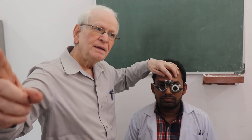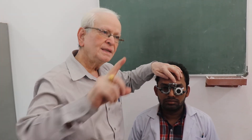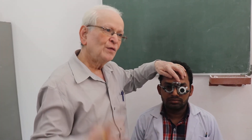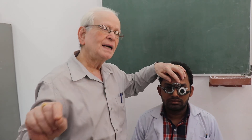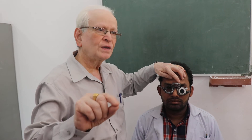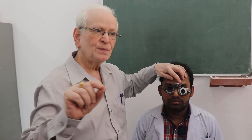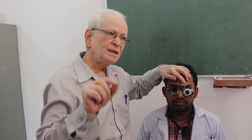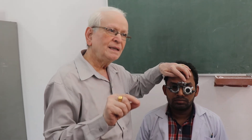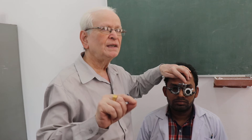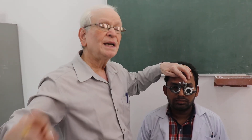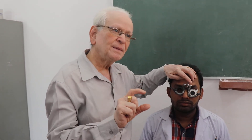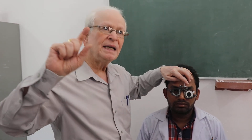Ask the patient to read the Snellen chart from top to bottom. Whichever line he reads, record that as the visual acuity. Suppose he reads the fourth line — his visual acuity will be 6/18. What is the meaning of 6/18? It means the patient is reading a letter from 6 meters which a normal person would read at 18 meters distance.